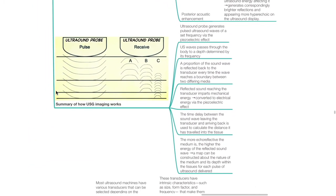Summary of how ultrasound imaging works: the ultrasound probe generates pulsed ultrasound waves of a set frequency via the piezoelectric effect. Waves pass through the body to a depth determined by frequency. A proportion of the sound wave is reflected to the transducer every time the wave reaches a boundary between two differing media. Reflected sound reaches the transducer, imparting mechanical energy that is converted to electrical energy via the piezoelectric effect. The time delay between the sound wave leaving and returning is used to calculate the distance travelled into the tissue. The more echo-reflective the medium, the higher the energy of the reflected sound wave. A map is then constructed about the nature and depth of the medium for each pulse of ultrasound delivered.